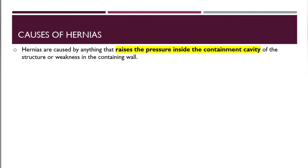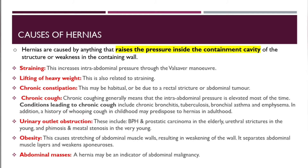Focusing on the organs in the abdominal cavity, the main causes of hernias include straining — which increases the intra-abdominal pressure through the Valsalva maneuver — lifting heavy weights, also associated with straining, and chronic constipation, which may be habitual or due to rectal stricture or abdominal tumors.